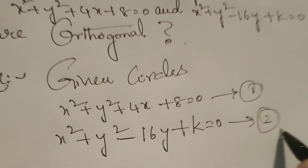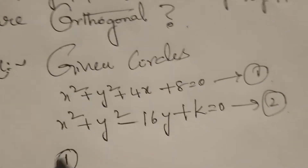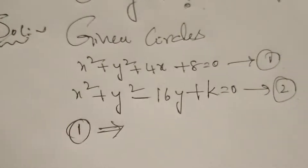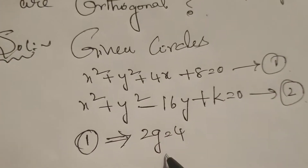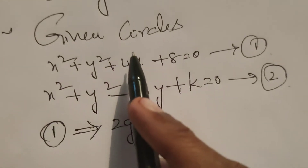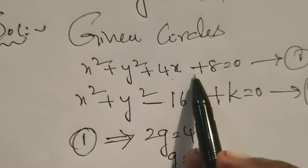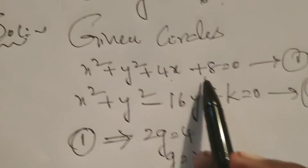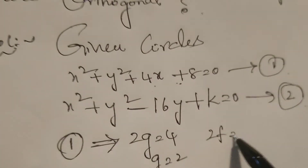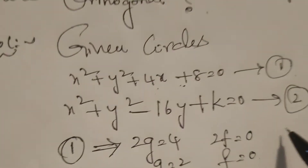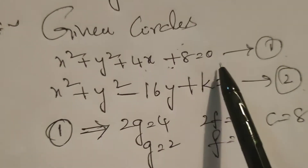This is equation number 2. In this first equation, comparing with the general equation of the circle: 2g equals 4, therefore g equals 2. Here 2f — there is no coefficient of y, so f equals 0. And constant c equals 8. In the first circle equation, constant c equals 8.